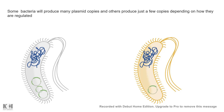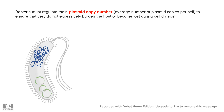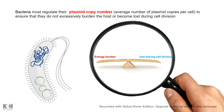Plasmid copy number regulation is important: if the copy number is too high it causes an energy burden to the bacteria, and if it's too low there is a risk of losing the plasmid — along with its antibiotic resistance or other important genes — which could be evolutionarily detrimental.